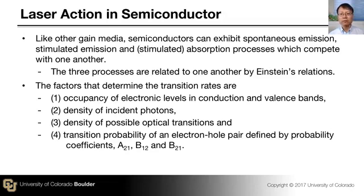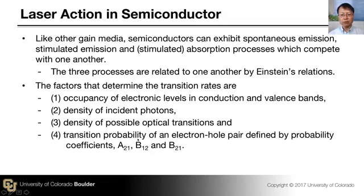Third is the density of possible optical transitions — optical transitions are not allowed between any two arbitrary states. You need certain conditions met, such as momentum conservation, in order to have an optical transition. So there are specific pairs of conduction band and valence band states between which optical transitions are allowed. Fourth, even if all conditions are met, optical transition is a stochastic process with a certain probability, given by the Einstein coefficients A21, B12, and B21 — corresponding to spontaneous emission, absorption, and stimulated emission.